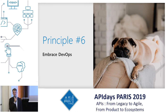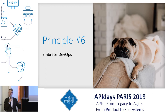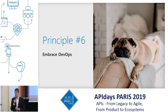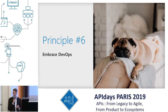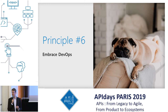Principle number six: embrace DevOps. DevOps is very popular among our customers, and there are usually three reasons. First, migrating the portal between environments — development, testing, staging, and production. Second, performing periodic backups and being able to restore them if something goes wrong. Third, enabling certain organizational processes like manual reviews of changes. We wanted to make sure DevOps is a first-class citizen of the new developer portal.